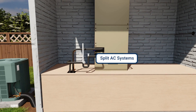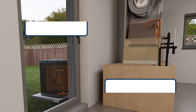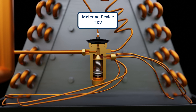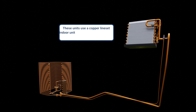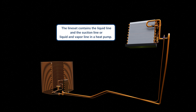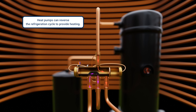Split AC systems and heat pumps consist of two main parts: an outdoor unit containing the compressor and condenser, and an indoor unit featuring the evaporator and, generally, the metering device. These split system units use a copper line set to connect the indoor unit to the outdoor unit. The line set contains the liquid line and the suction line, or the liquid line and the vapor line in a heat pump, because heat pumps can reverse the refrigeration cycle to provide heating in addition to cooling.